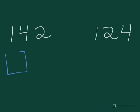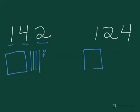Here's my square for 100, my four tens for 40, and my two ones. Over here I have my square for a hundred, my two tens for twenty, and four ones.